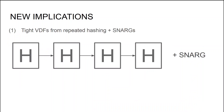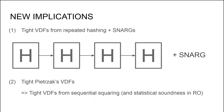Applying this compiler to existing VDF constructions gives the following. For the SNARK setting, we obtain a tight VDF where the compute algorithm is just repeated hashing and the prove algorithm is a succinct non-interactive argument that the computation was well-formed. We lift this to the tight prover setting, meaning the prover runtime is approximately t. On the other end of the spectrum, we can apply our compiler to Pieterzak's VDF and obtain a tight VDF just from the sequential squaring assumption, with statistical soundness in the random oracle model.